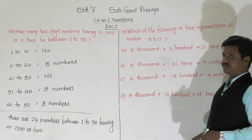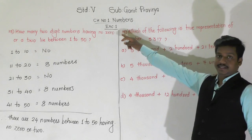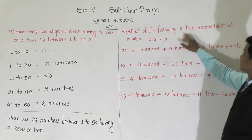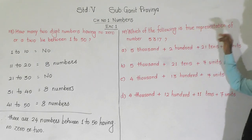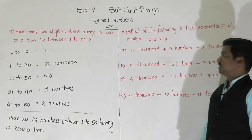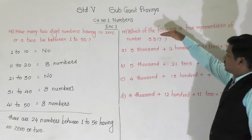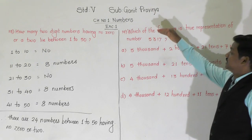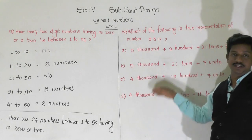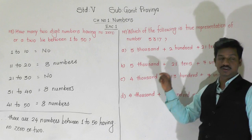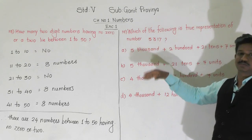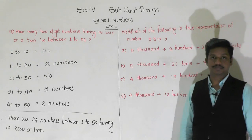Now question number 19: Which of the following is the true representation of the number 5,317? There are 4 options given, out of which one is correct. We have to find the one correct option which is the true expanded form of 5,317.